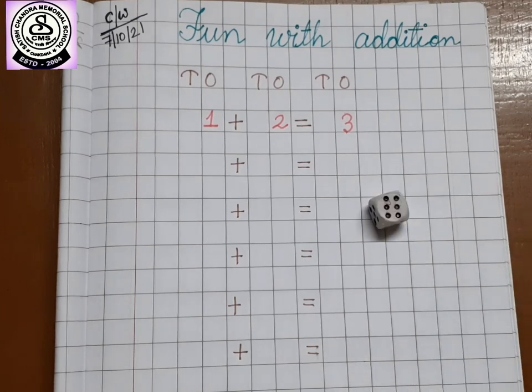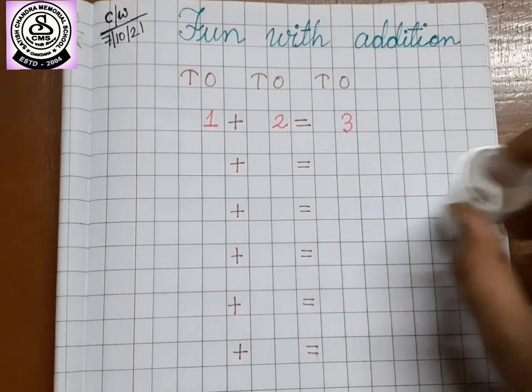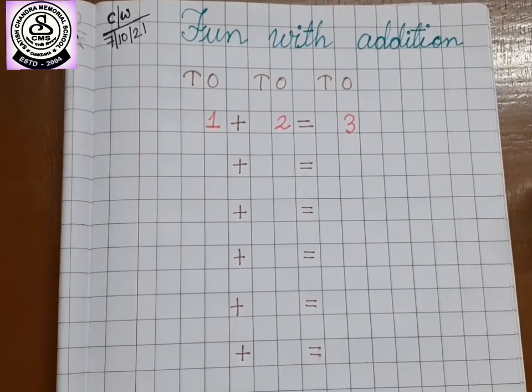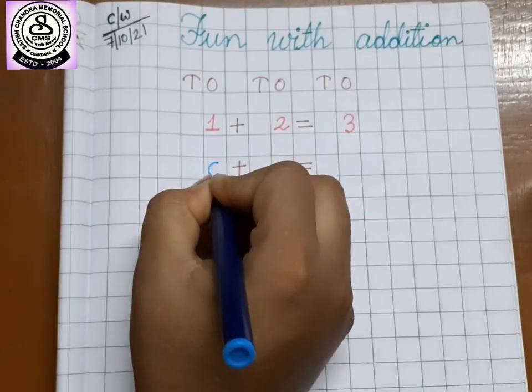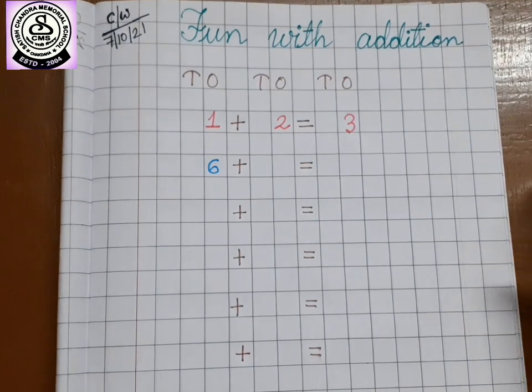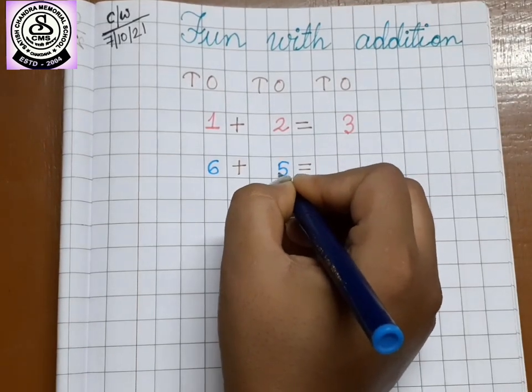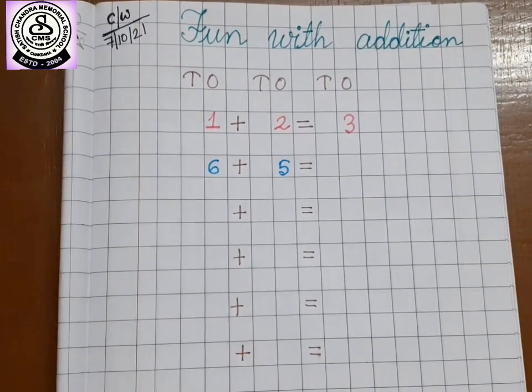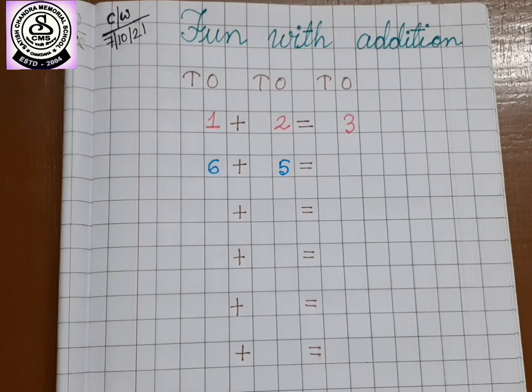Again, we have to roll it. How much we got? Six. So, let's write down six. Next, again, try to roll five. So, let's write five again. So, six plus five. Tell me how much you get.